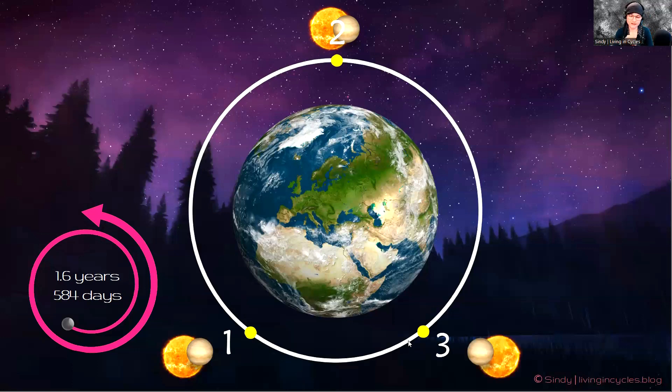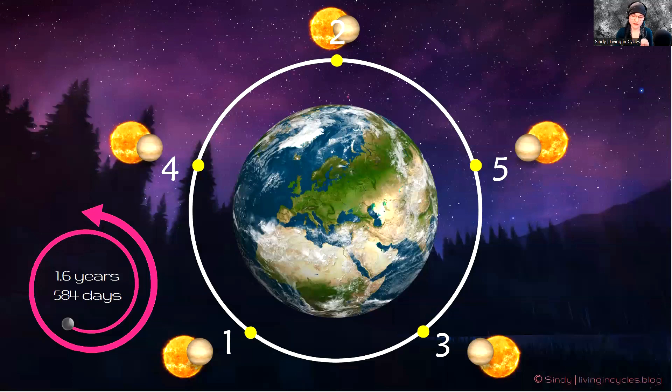And then it's again 584 days, and Venus and Sun will again conjoin. And from this point, again, 1.6 years, and there is another Venus-Sun conjunction. Now, if you connect the dots, the conjunctions of Venus and the Sun, in order of their appearance, you go from 1 to 2, from 2 to 3, from 3 to 4, from 4 to 5, and from 5 to 1 back. You get a pentagram.